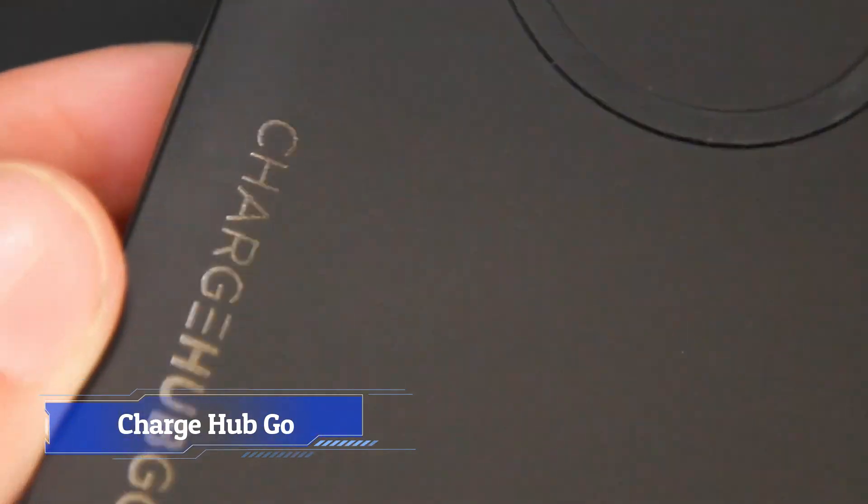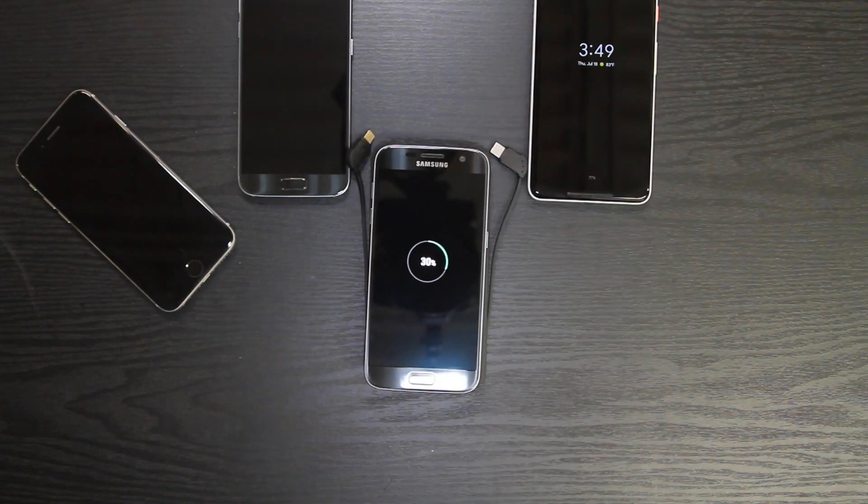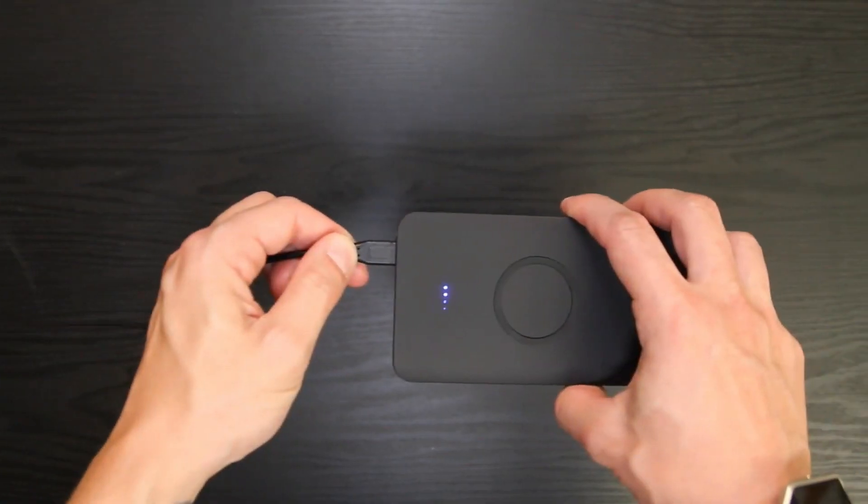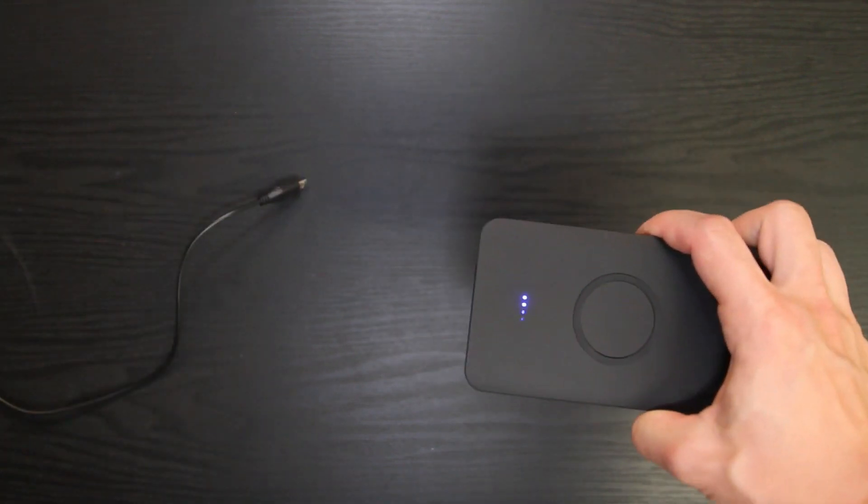Number 4. CHARGE HUB GO. These days, let's face it, our lives revolve around our gadgets. Therefore, when our phone runs out of power, it's a nightmare. Charge Hub Go is a power bank from Limitless Innovations that aims to fix all your power supply problems. What sets it apart from the rest of the power banks in the market?